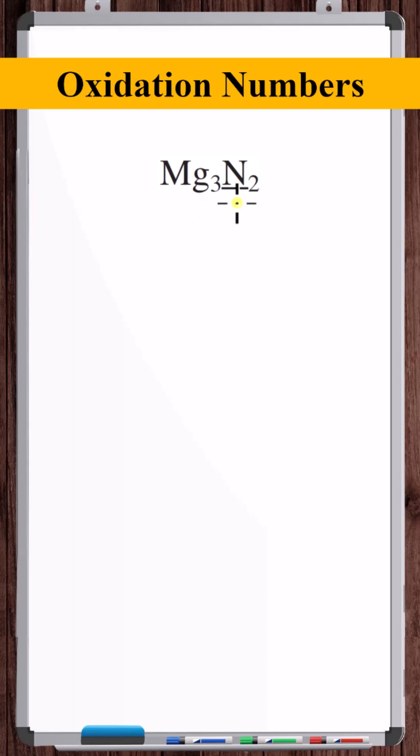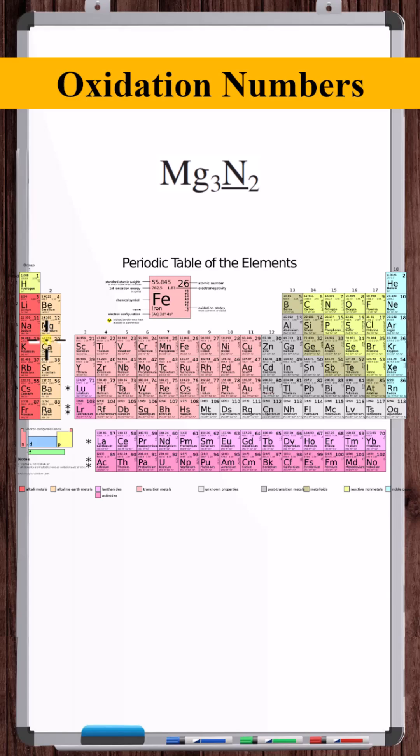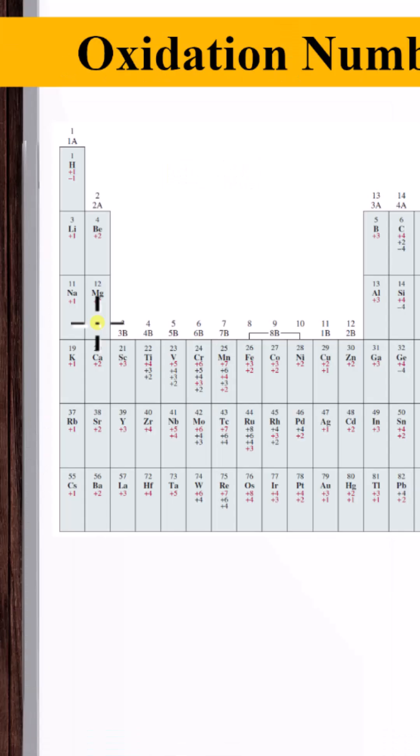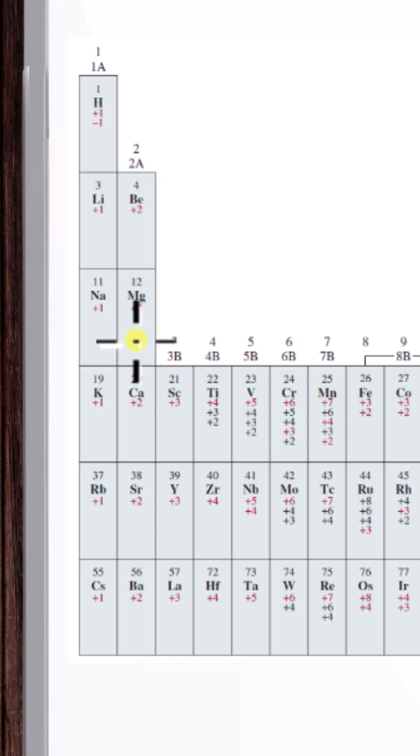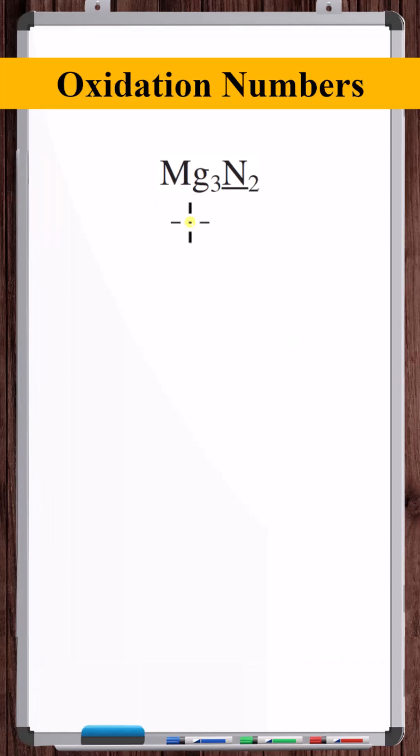Let's calculate the oxidation number of nitrogen in Mg3N2. Magnesium is an alkaline earth metal. Most commonly, alkaline earth metals will have oxidation numbers of +2, but this rule for alkaline earth metals isn't an official hard rule.